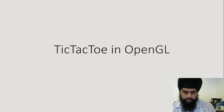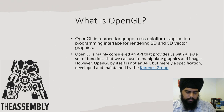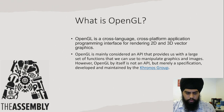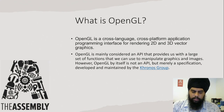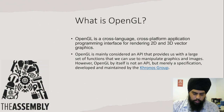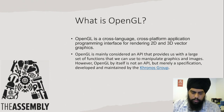What is OpenGL? OpenGL is a cross-language, cross-platform application program for rendering 2D and 3D vector graphics. OpenGL is mainly considered an API that provides us with a large set of functions that we can use to manipulate graphics and images. However, OpenGL by itself is not an API but merely a specification developed and maintained by the Khronos Group.